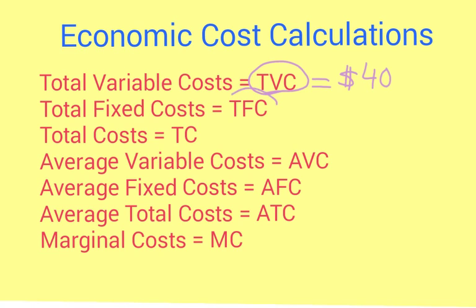Total fixed costs, or TFC, are costs associated with fixed inputs. Fixed inputs are usually big-ticket items the business purchases — perhaps a building you lease, big pieces of machinery, or employees on yearly contracts, which act as a fixed cost at least for that year. Let's say per week we have total fixed costs of $30.